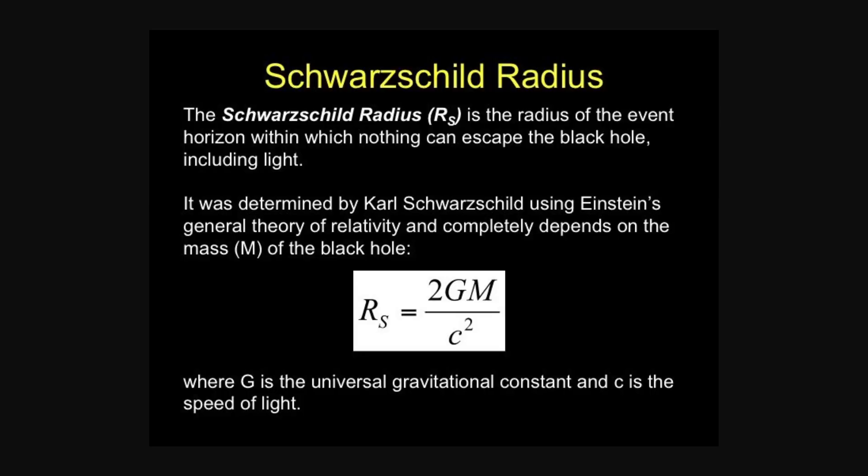The radius of the event horizon can be calculated with the formula: radius Schwarzschild equals 2 times the gravitational constant times the mass of the black hole divided by the speed of light squared. This will come in handy later. This formula means that the larger the mass of the black hole, the larger the event horizon.